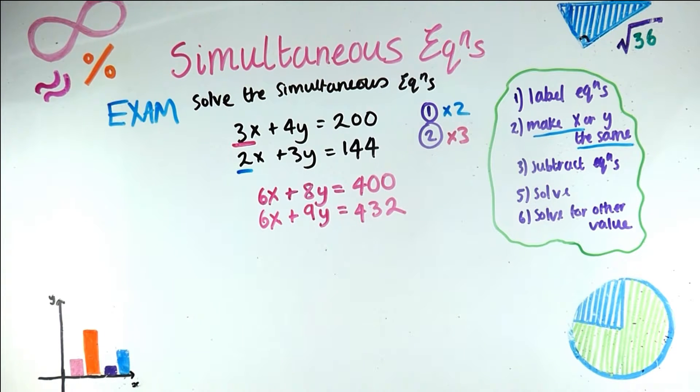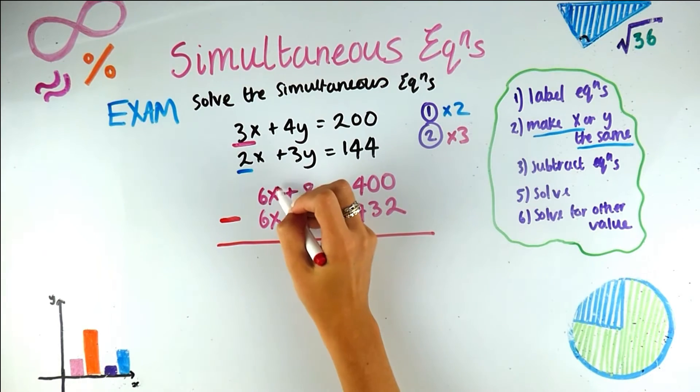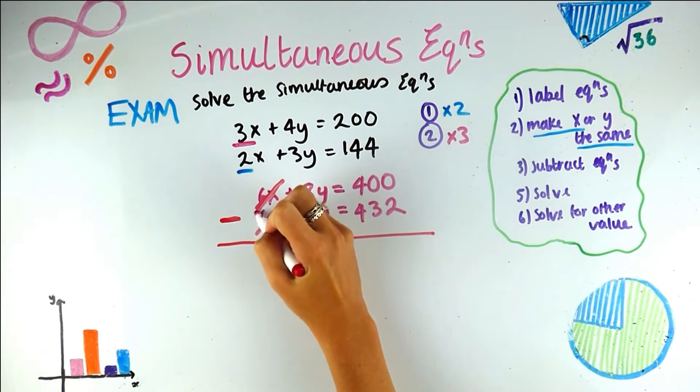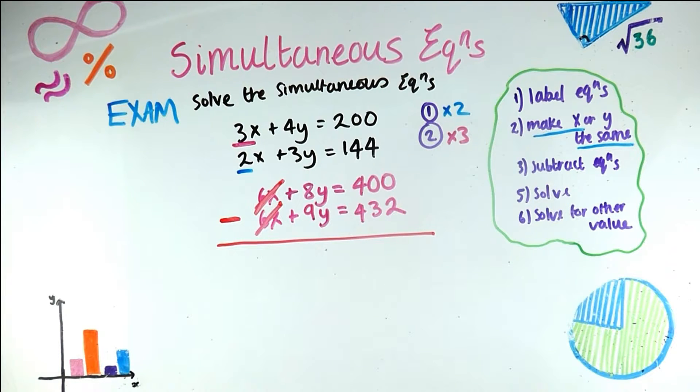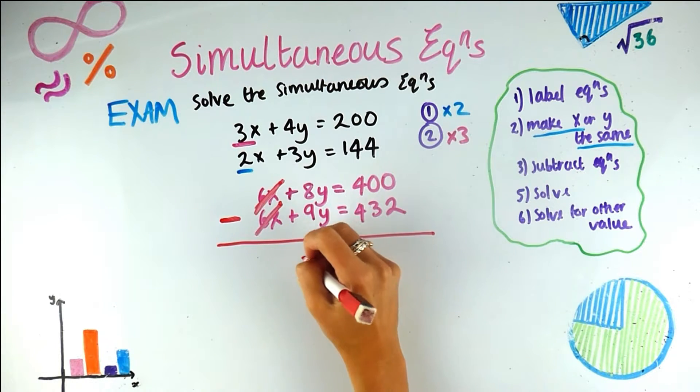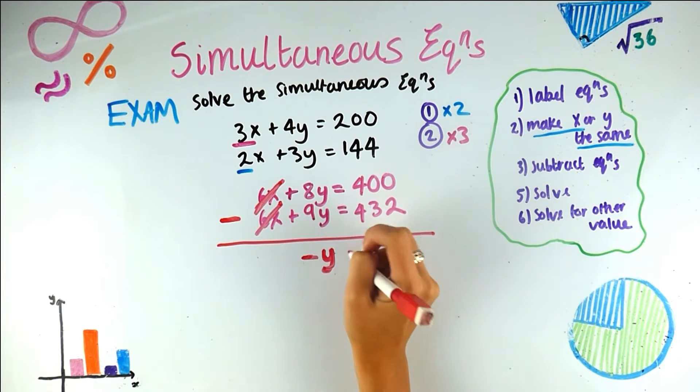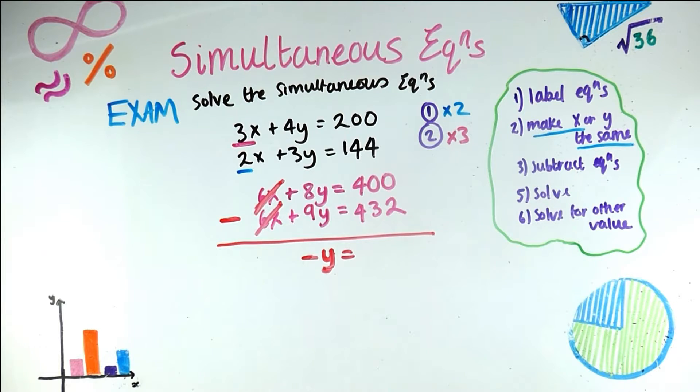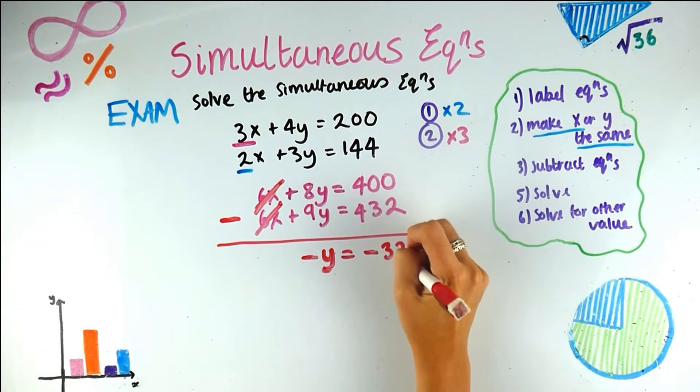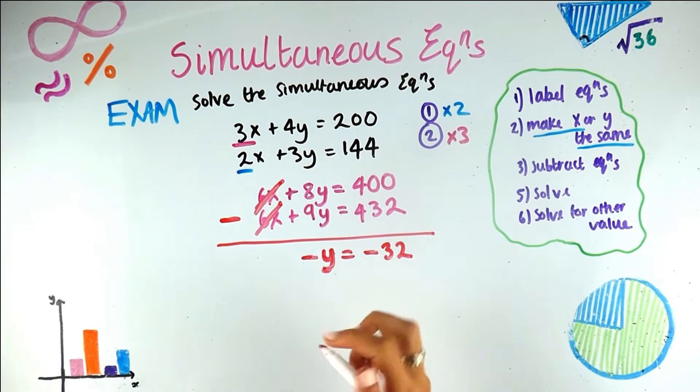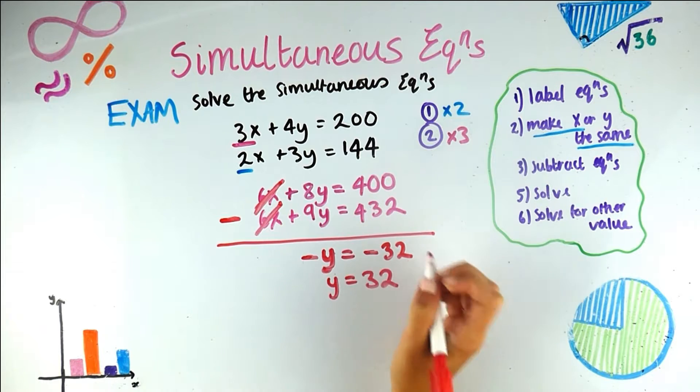3y times 3 is 9y. And 144 times 3 is 432. We're now on to step 3, which is subtract the equation so we can eliminate having an x involved and solve nicely. So this is my subtract sign. I'm subtracting the equations. So 6x minus 6x disappears. That was the whole point of making the x's the same. That should always happen. If it doesn't happen, you've made a mistake here. So then we've got 8y minus 9y, which gives us minus 1y. So we can just write minus y. We don't need to write the 1. Then we have 400 minus 432, which gives us minus 32. Now we can multiply this whole thing by minus 1, so we can just get rid of the minuses. So that is the same thing. And now we have y. So y equals 32.